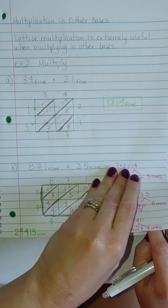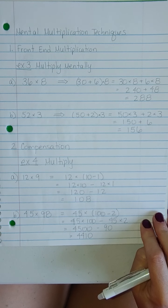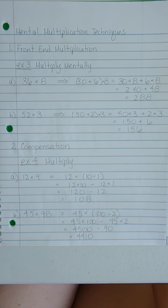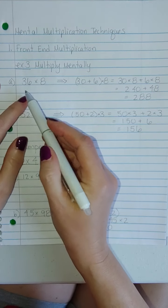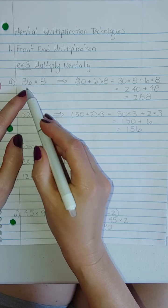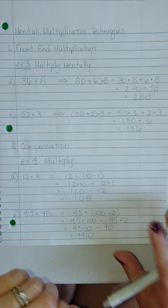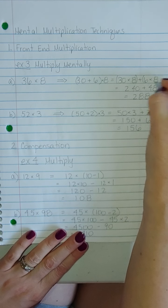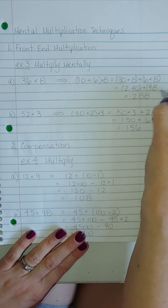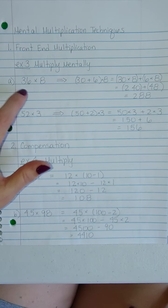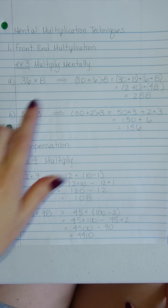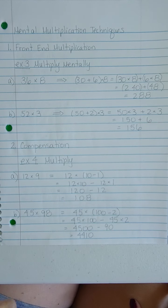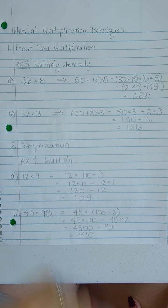Mental multiplication techniques. Now remember, this means you're finding the exact answer by doing it in your head. So, front end multiplication. That one is taking something like 36 and splitting it up. This is a distributive process. This is basically using the distributive property. And taking 8 times 30 and then 8 times 6. So 8 times 30, 8 times 6, you get 240 and 48. That's actually how my brain works with this. If I have to multiply something like that, I'll do 8 times 30 and then 8 times 6 and add them together. Same thing here. I'll do 3 times 50 and 3 times 2.